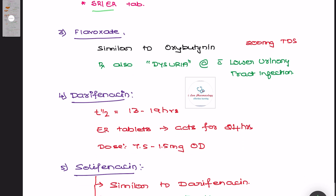Moving on to flavoxate, which is similar to oxybutynin and can additionally be used in the treatment of dysuria associated with lower urinary tract infection. It is given at 200 milligrams three times a day. One of the important drugs following flavoxate is darifenacin. Its half-life is very long at 13 to 19 hours, and the extended-release tablets of darifenacin can act up to 24 hours. Once-daily administration is enough — at 7.5 or 15 milligrams.